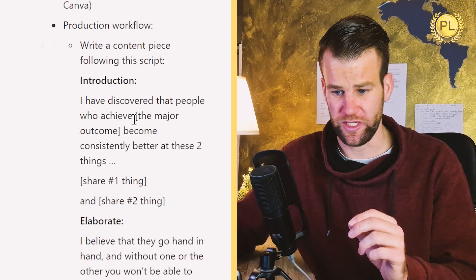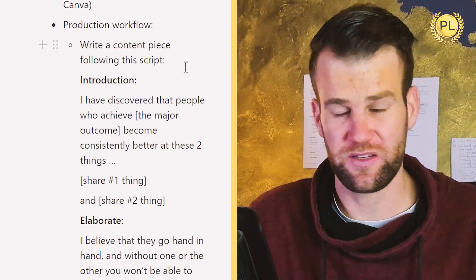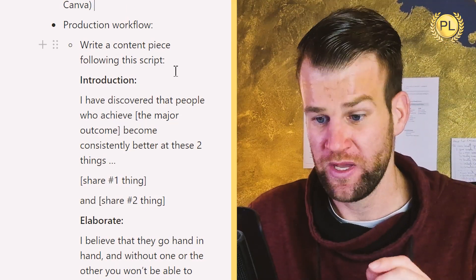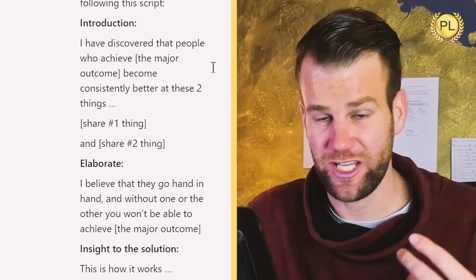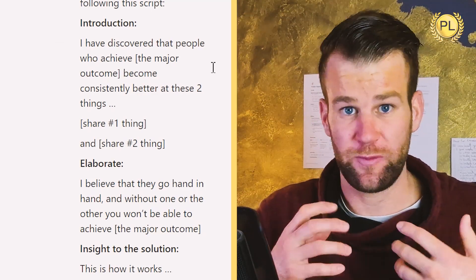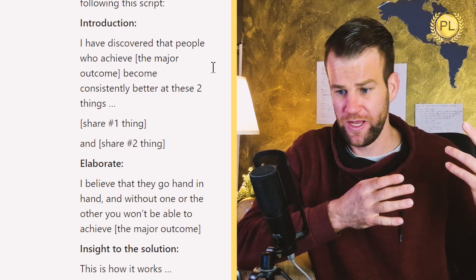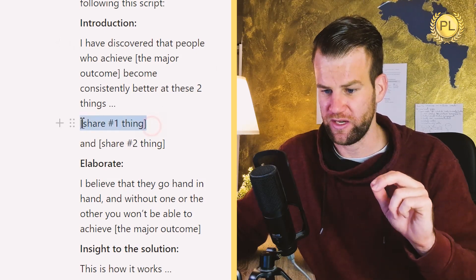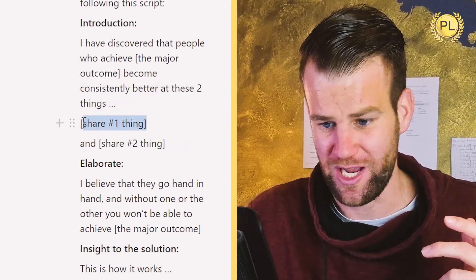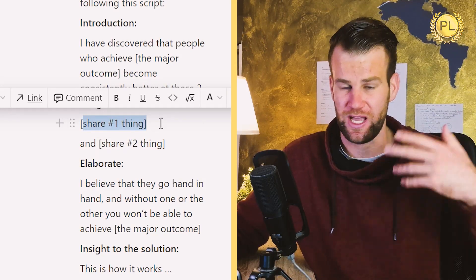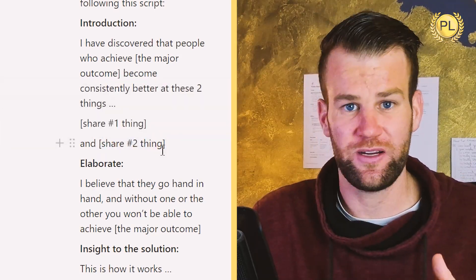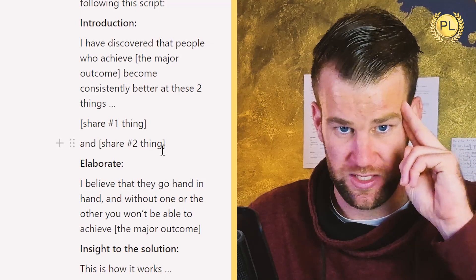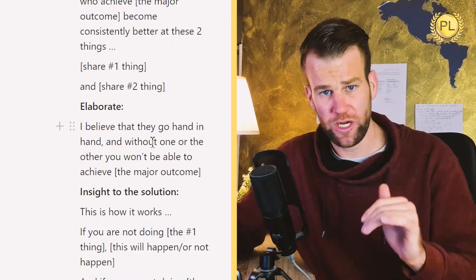First, you're going to write a content piece following a script. You're basically going to say: I have discovered that people who achieve — for example, people who lose weight — became consistently better at these two things. Then you share the number one thing and the number two thing. For example, they started eating healthily, and number two, they became consistent with workouts and exercising.